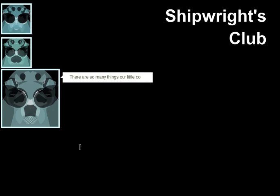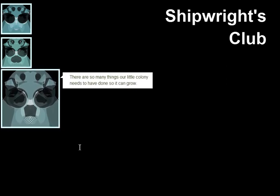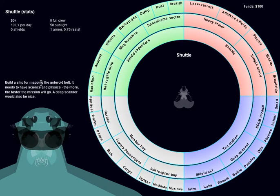Here's your quest broker. Normally he'd take you over to a quest broker screen where you get to choose between the various missions, but I haven't built that because there's only one mission right now, and that is to build a ship for mapping the asteroid belt. It needs to have science and physics. The more, the faster the mission will go. A deep scanner would also be nice.